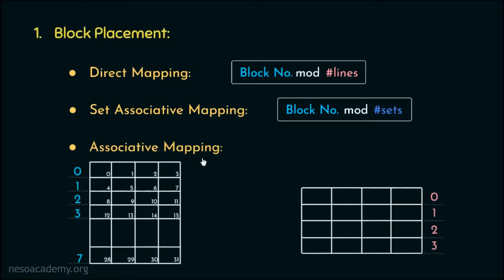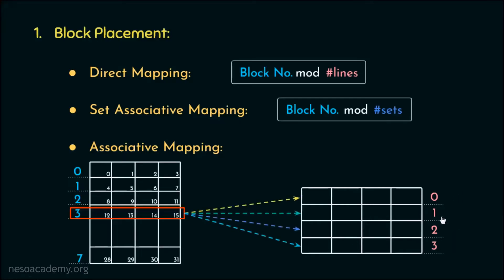In fully associative mapping, suppose the cache is empty. If we need to place the contents of main memory block number 3, there are no restrictions — it can be placed onto any of the cache lines. That's how block placement works in associative mapping.